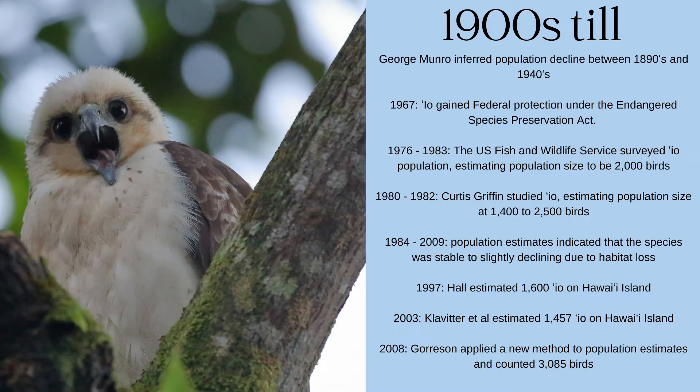Not a lot is written about EO in the early 1900s, although George Monroe did infer population decline between the period of 1890 and 1940. By 1967, EO had gained federal protection under the Endangered Species Preservation Act, and that launched a number of population surveys and population estimates, trying to establish whether or not the population of EO was stable or declining.